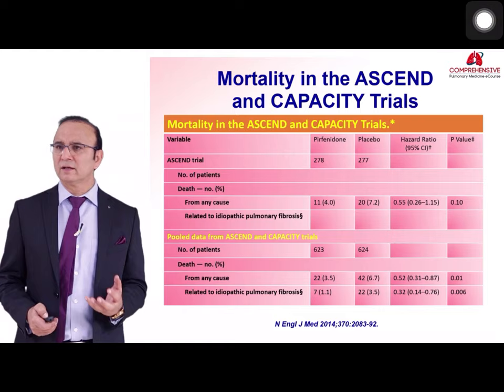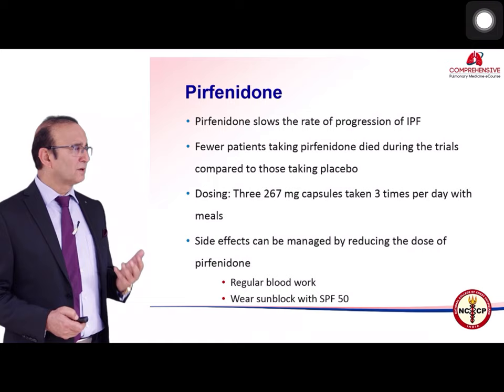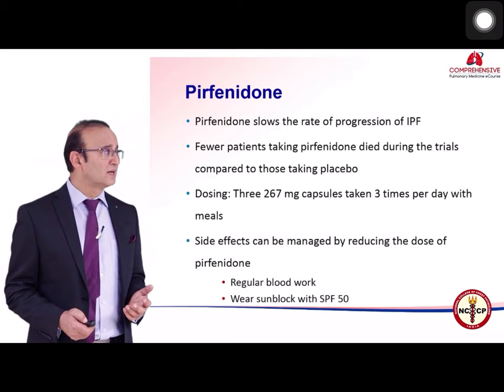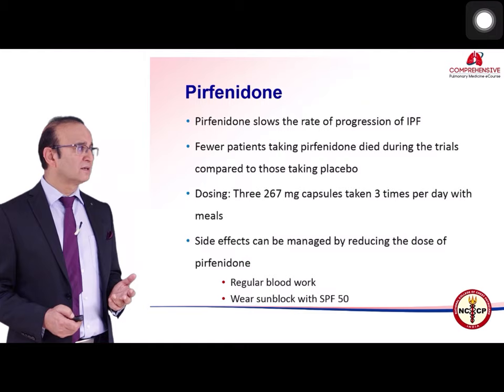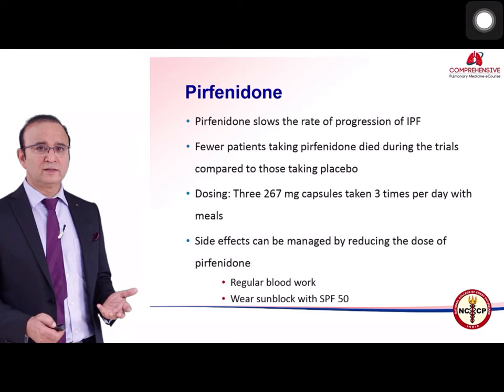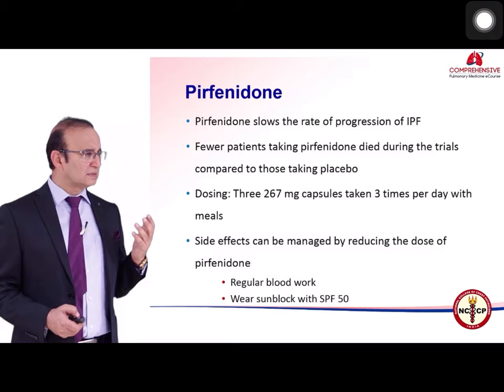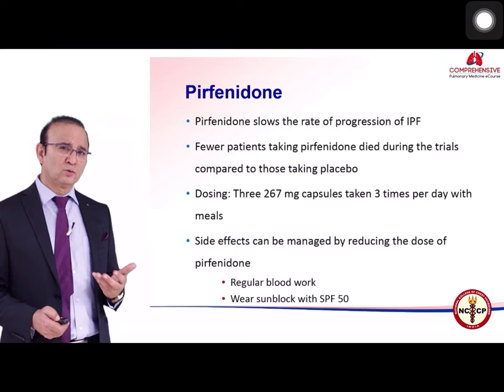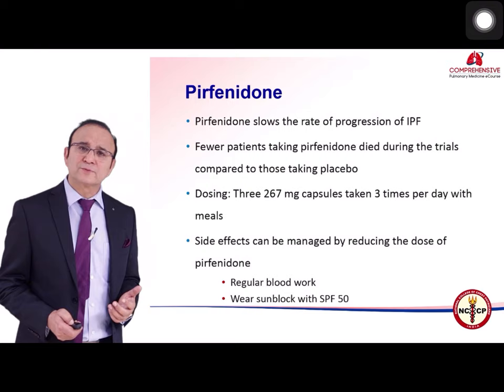The bottom line is that pirfenidone slows the rate of IPF progression. Fewer patients taking pirfenidone died during trials compared to placebo. Dosing is 3 capsules taken 3 times per day with meals, and even higher doses have been used clinically. Side effects include GI symptoms such as nausea and vomiting, and skin changes. Regular blood work is required, and patients should use sunblock with SPF 50 when using pirfenidone.